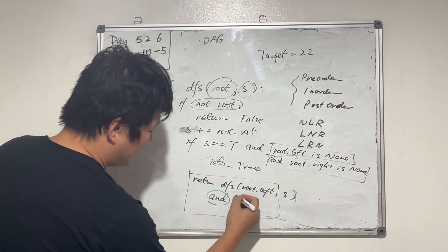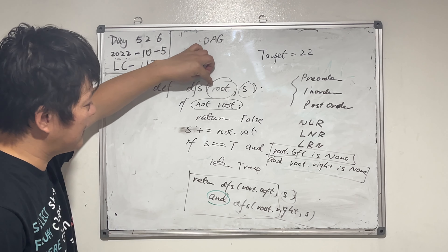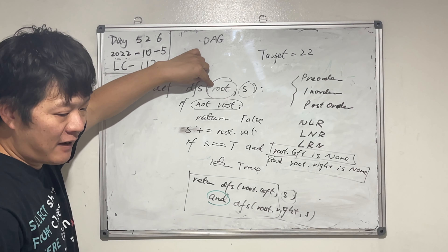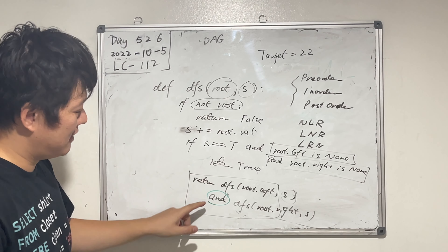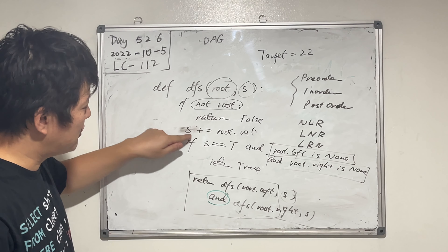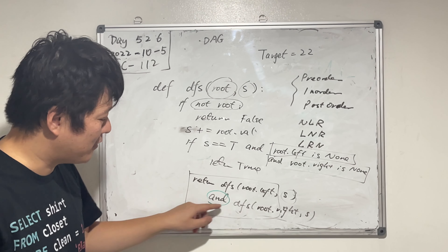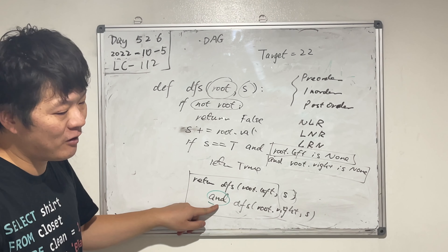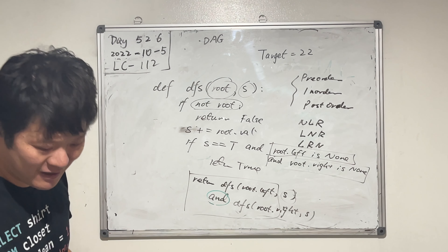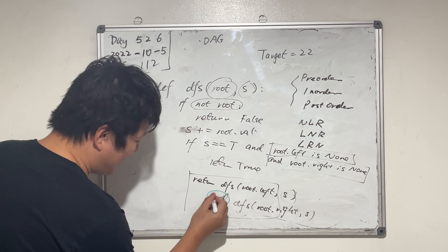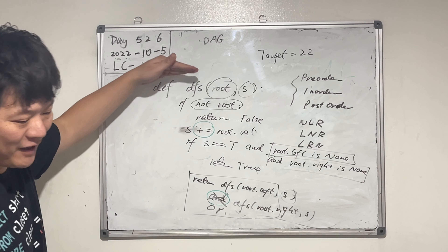We need to recursively check the left tree and right tree. This function recursively checks if the current subtree starting with root, given the sum, can find a path that equals the target. At each node we update the sum and pass it down to the left tree and the right tree. Should we use AND or OR here? Obviously OR — we check if there's a path in the left tree or in the right tree.